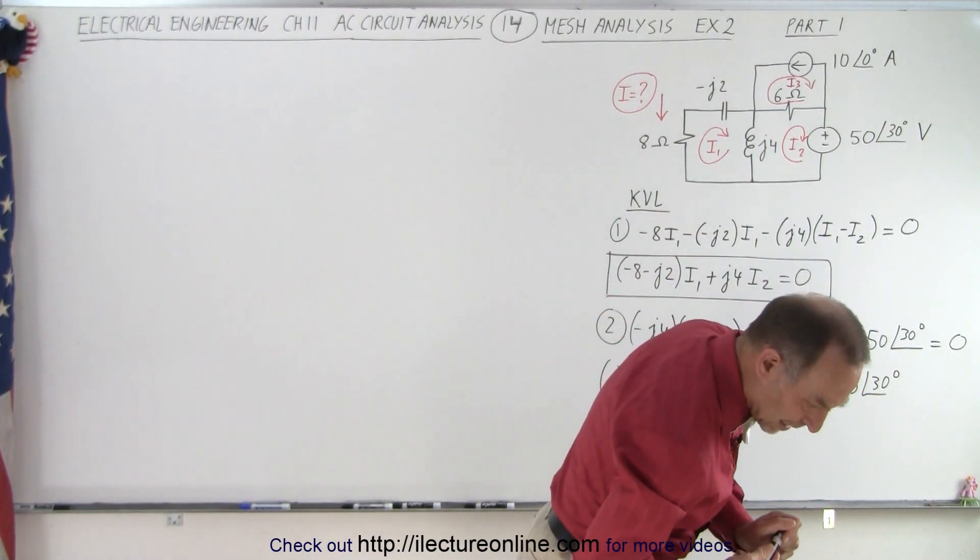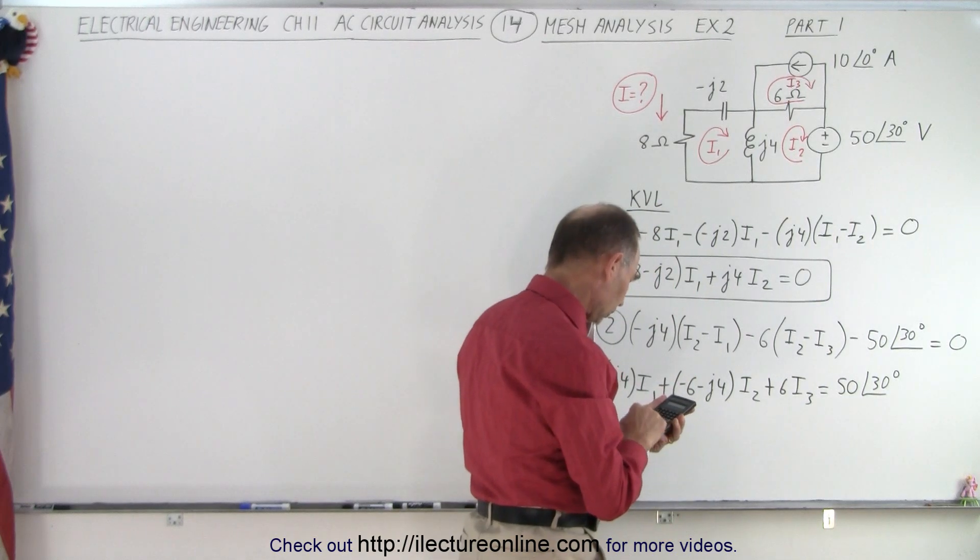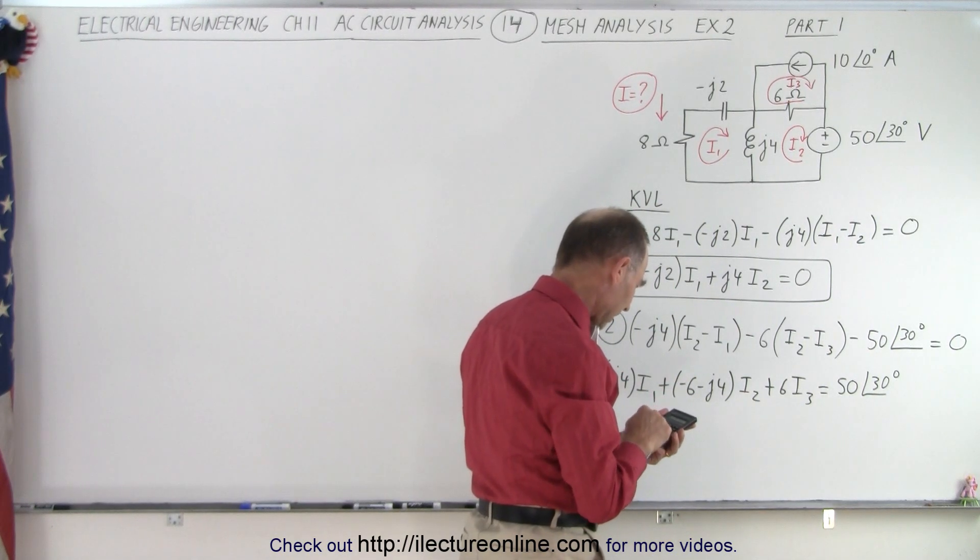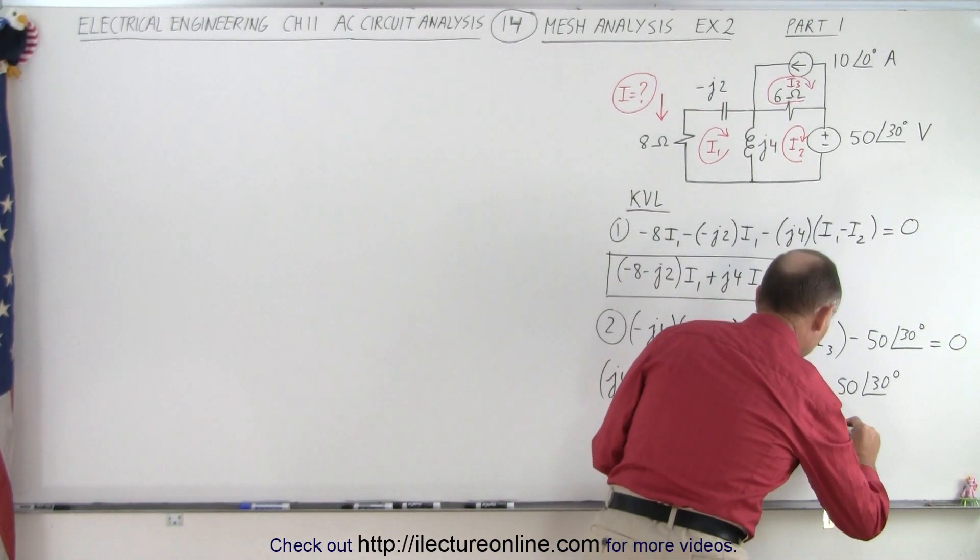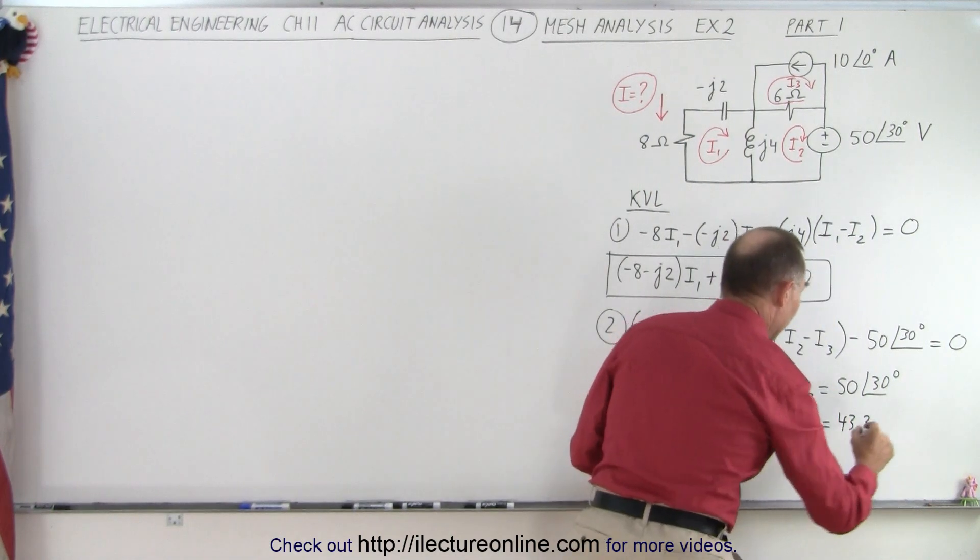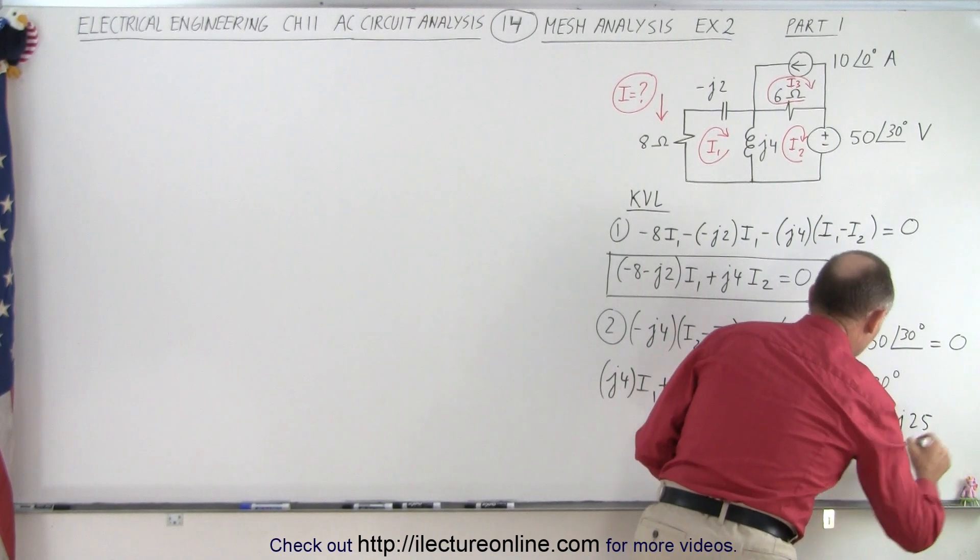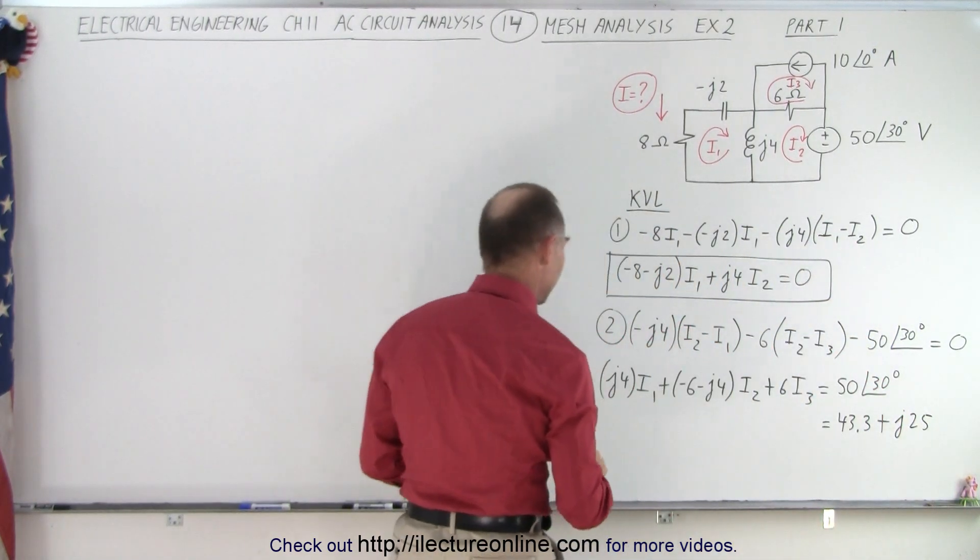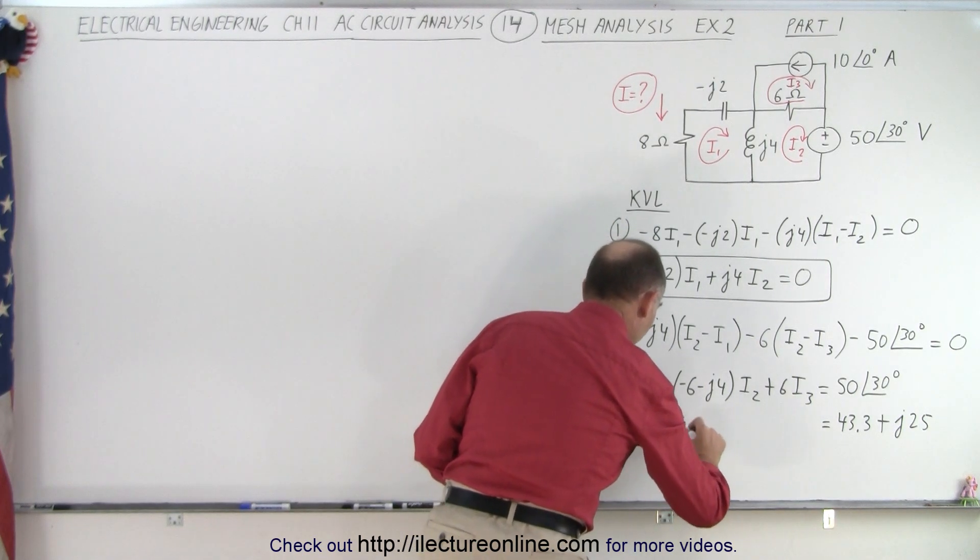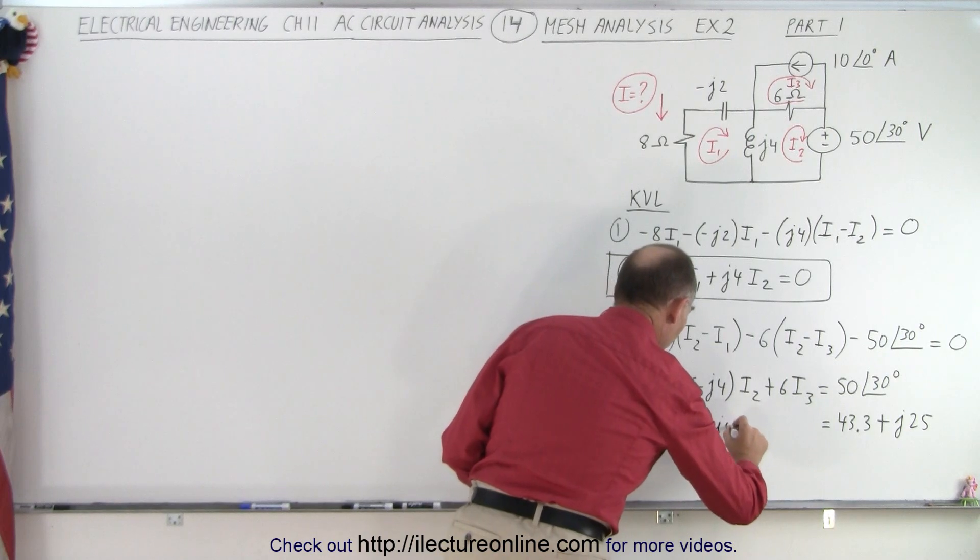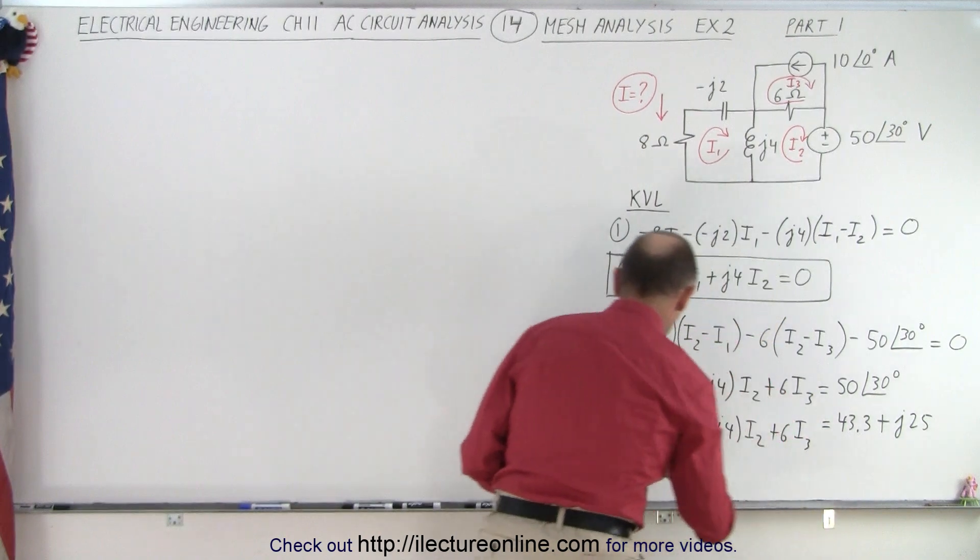Now also let's write that out in its component form. So 30, take the cosine of that, that's 0.866 times 50, that's 43.3. So this can be written as 43.3, and then plus that would be 25, J25. So we can also write it like that. And so let's rewrite it here so it looks complete: J4 I1 plus a minus 6 minus J4 I2, and then a plus 6 I3. There's our second equation.